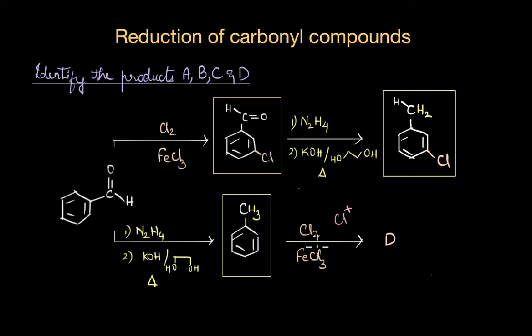Basically chlorination of toluene would give us a mixture of ortho and para substituted products. So the structure of D would be the para substituted product or the product where chlorine is at the ortho position. Here again you can see that we get different products. In the second case we get ortho and para substituted products and in the first case we get a meta substituted product.